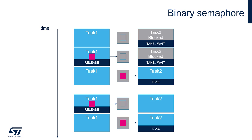Please notice that there is no blocking mechanism for the task which is releasing the semaphore. So even if the semaphore is already given and released, we cannot wait — it will be taken as soon as released. This is a bit different from what we see within queues, where both transmitter and receiver can be blocked by the queue.